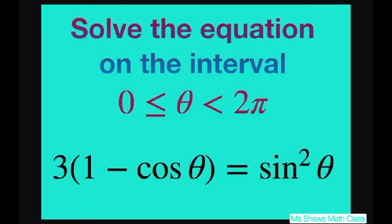Hi everyone. We're going to solve the tricky equation 3 times 1 minus cosine of theta equals sine squared theta on the interval 0 to 2 pi.